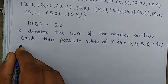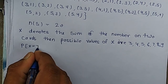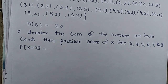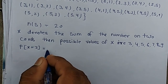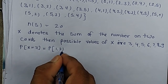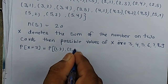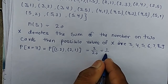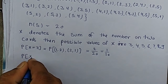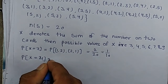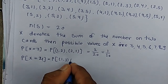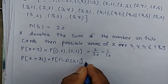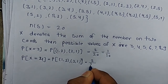P(X=3): the pairs giving sum 3 are (1,2) and (2,1) — only 2 possibilities out of 20, so P(X=3) = 2/20 = 1/10. P(X=4): the pairs giving sum 4 are (1,3) and (3,1) — also 2 possibilities out of 20, so P(X=4) = 2/20 = 1/10.